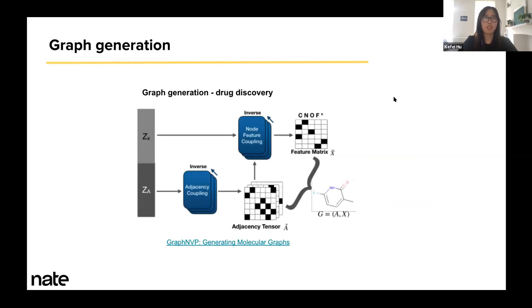Graph generation has been the hot direction in the context of drug discovery. Basically, compounds can be represented as graphs where the nodes represent atoms and edges represent a certain type of bond. In this paper, they are generating chemicals with desired properties using a two-flow generation model.